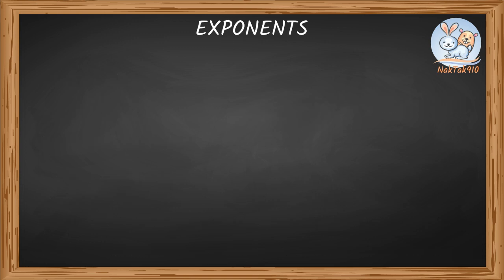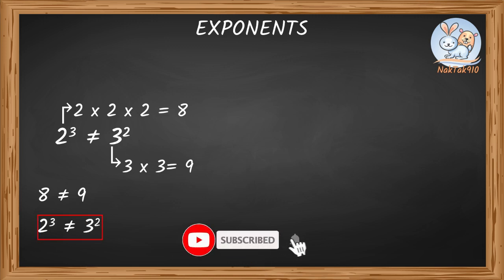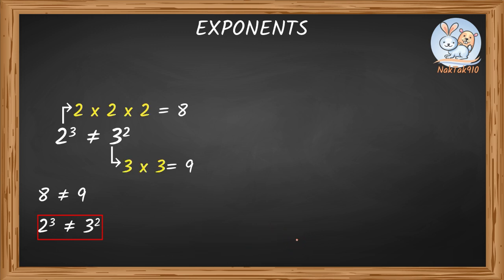There are a few things we need to remember. 2 to the power of 3 is not the same thing as 3 to the power of 2. Let's see: 2 to the power of 3 equals 2 times 2 times 2, which gives us 8. Whereas 3 to the power of 2 is 3 times 3, which equals 9. So 2 to the power of 3 does not equal 3 to the power of 2. Multiplying 2 three times and multiplying 3 two times is not the same.